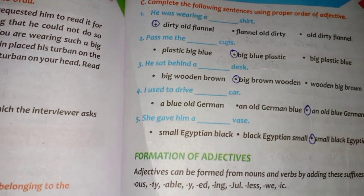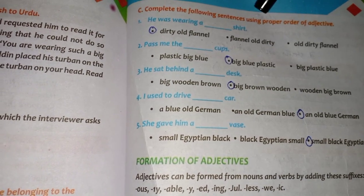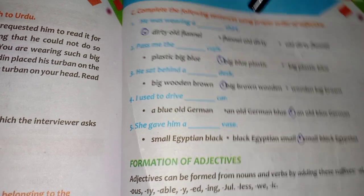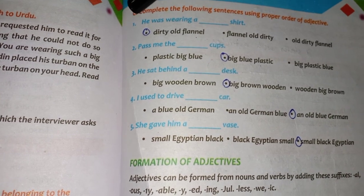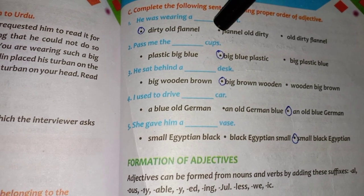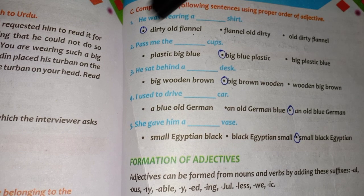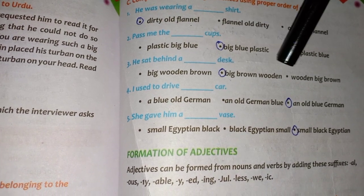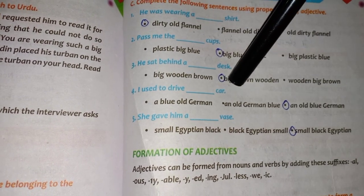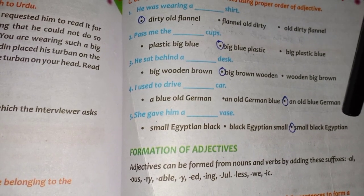Then we have to move towards page 62, question C: complete the following sentences using proper order of adjective. For proper order of adjective, dear students, I'm going to give you its proper formula. He was wearing a dirty old flannel shirt. Part two: pass me the big blue plastic cups. He sat behind a big brown wooden desk. I used to drive an old blue German car. She gave him a small black Egyptian vase.